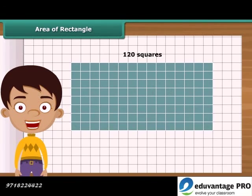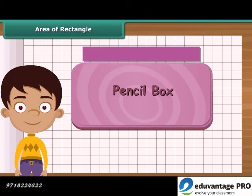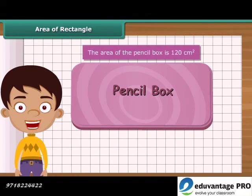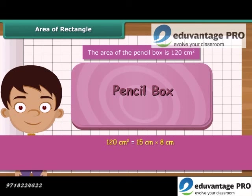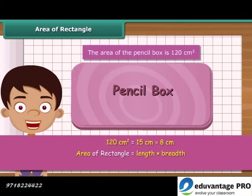Altogether, 120 squares have been arranged on the squared paper. It means the area of the pencil box is 120 square centimeters, which is 15 centimeters multiplied by 8 centimeters. So, we can generalize that the area of any rectangle is obtained by multiplying its length and breadth.